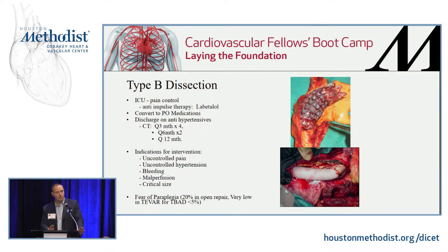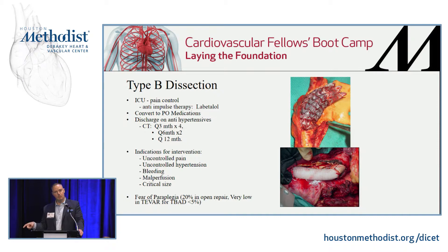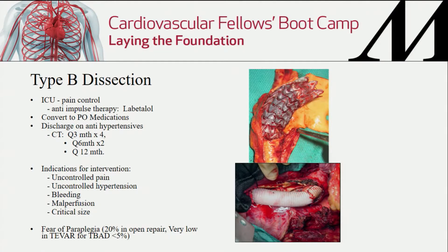For type Bs, the majority of patients are going to get anti-impulse therapy and medical control in the ICU, unless there's malperfusion or a complication. We get the initial CT scan in the emergency room, maybe one at 72 hours, then if stable, at 3 months, 6 months, and 12 months. Many of these patients are going to degenerate — most frequently it's the very proximal descending thoracic aorta that dilates up first — so you definitely have to follow them.